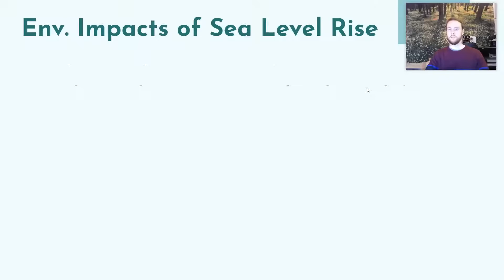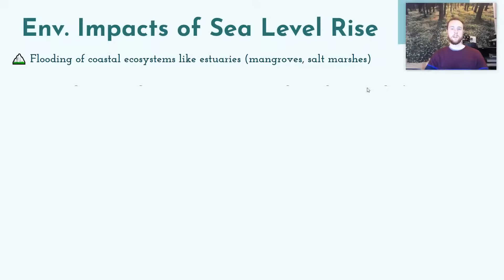The first environmental impact of rising sea levels is the flooding of coastal ecosystems, especially estuaries like salt marshes and mangroves. These are super productive ecosystems — great storm buffers, supporting high biodiversity and commercially fished species, providing income and food. When they flood, they're converted from their unique, partially land-based, partially shallow brackish-water ecosystem into just open ocean, and we lose them as ocean waters move further inland.